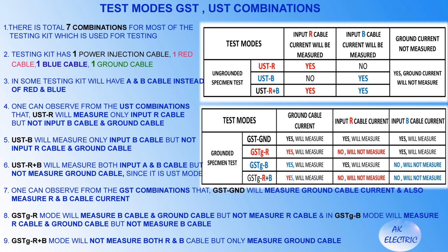UST B will measure only the input blue cable but not the input red cable and ground cable. UST R plus B will measure both input A and B cables but not the ground cable, since it is in UST mode. From the GST combination, GST Ground will measure ground cable current and also measure red and blue cable current. GST R mode will measure blue cable and ground cable but not red cable. In GST GB mode, it will measure red cable and ground cable but not blue cable.